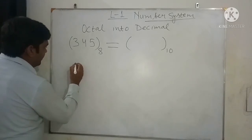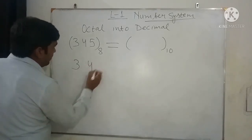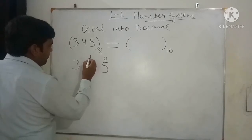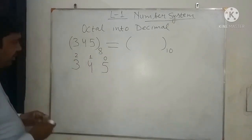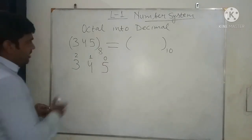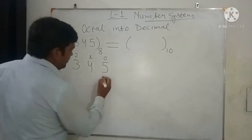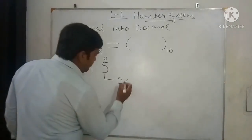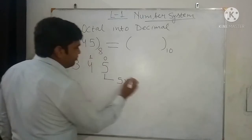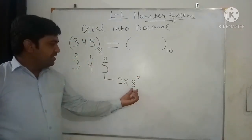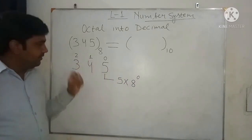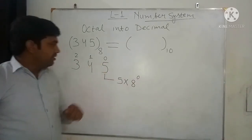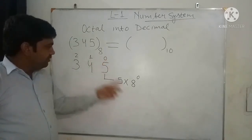First we write 345 and above it we write the position of each digit. The digit 5 is at position 0, 4 is at position 1, and 3 is at position 2. The base of octal is 8, so we multiply each digit by 8 raised to the power of its position. So 5 multiplied by 8 to the power 0.